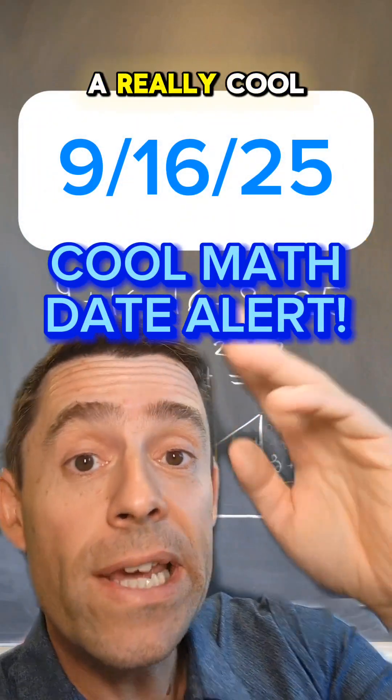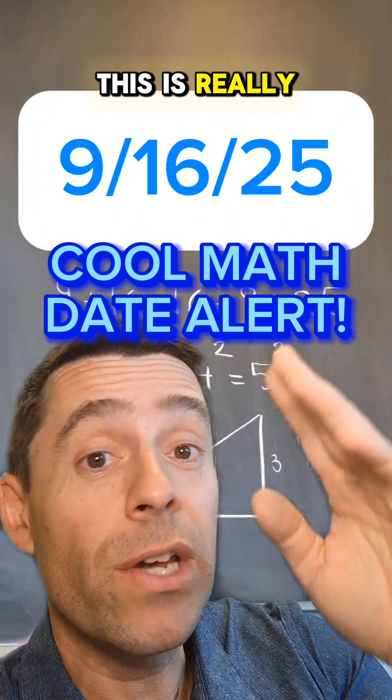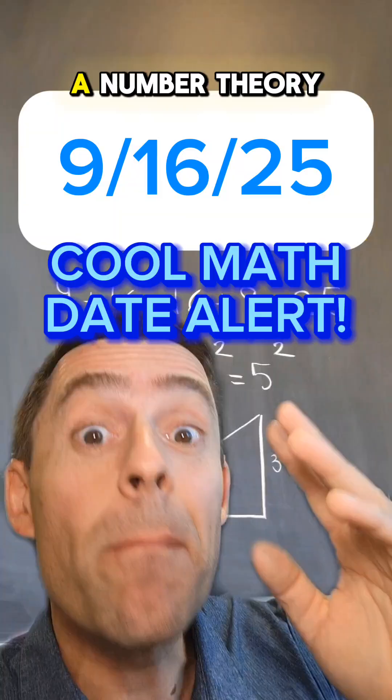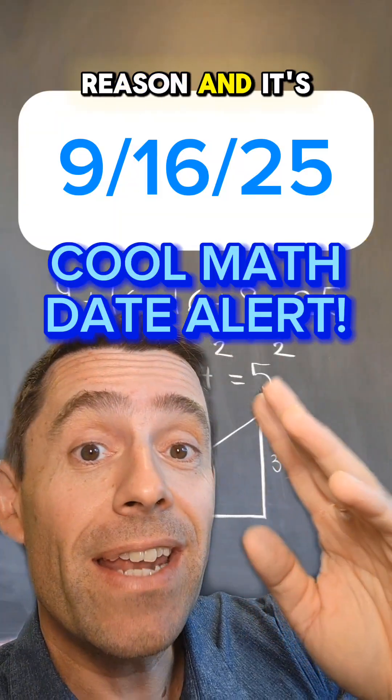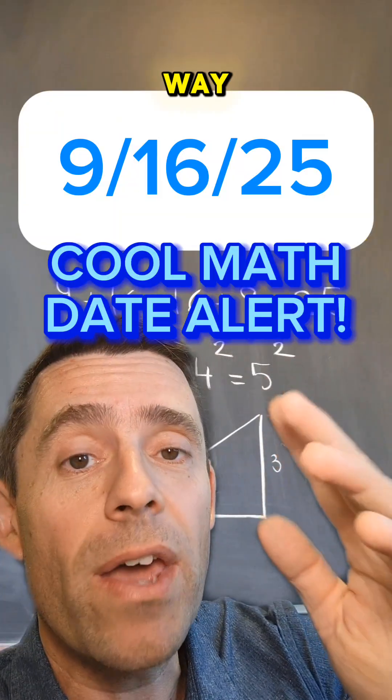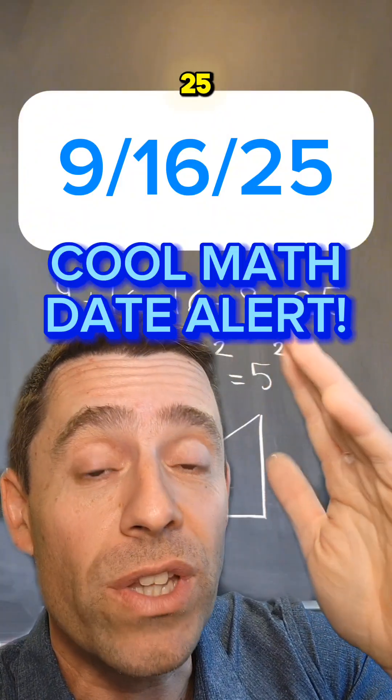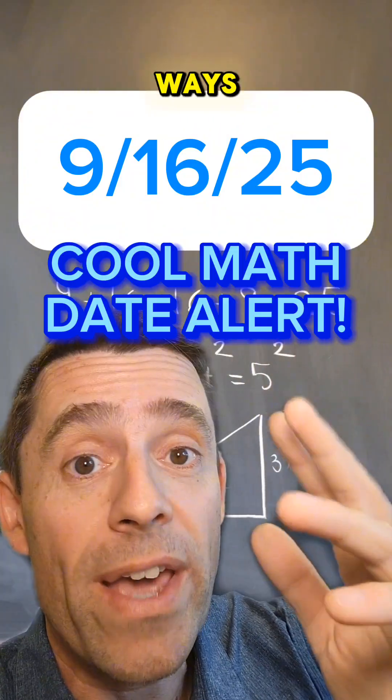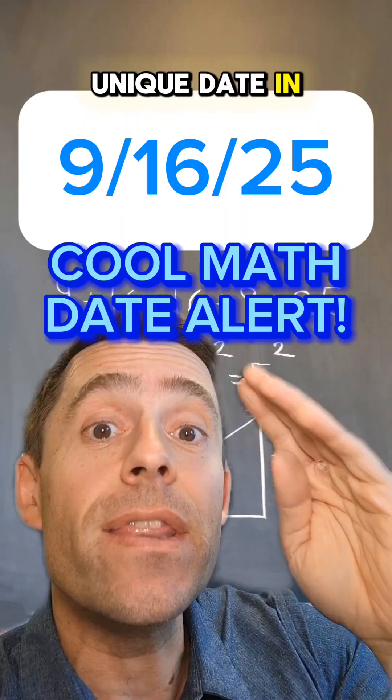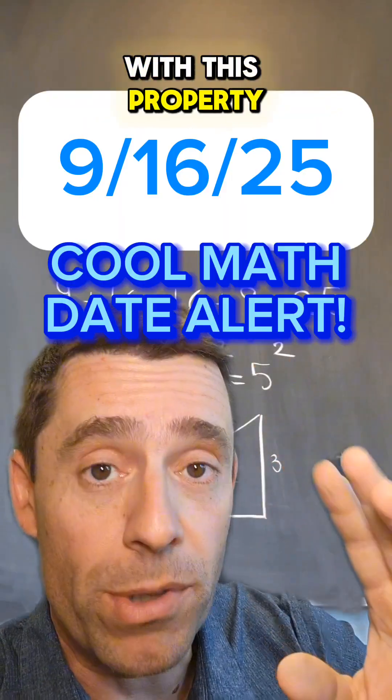I want to alert you to a really cool date coming up. This is really cool because of a mathematical reason, a number theory reason, and it's a reason that works the same way whether you read dates as 9-16-25 or 16-9-25. It's cool both ways, and it's the unique date in the entire century with this property.